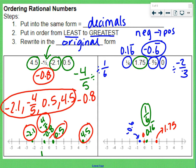So now we can put them in order from least to greatest. This is our smallest number, but remember that was originally negative two-thirds, so we need to write negative two-thirds. Then our next number, which was 0. Then our next number, which is one-sixth. And then our last number, 1.75.